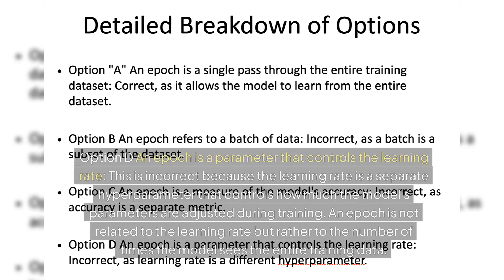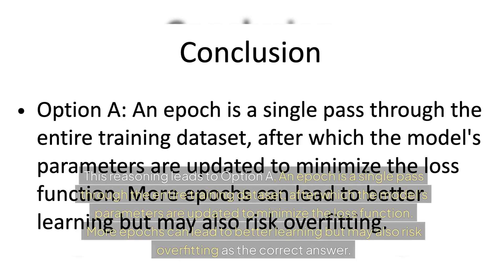Option D: an epoch is a parameter that controls the learning rate — this is incorrect. The learning rate is a separate hyperparameter that controls how much the model's parameters are adjusted during training. An epoch is not related to the learning rate, but rather to the number of times the model sees the entire training data.